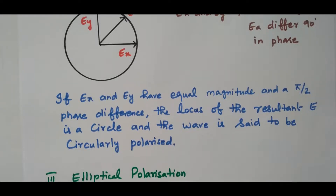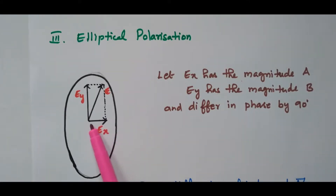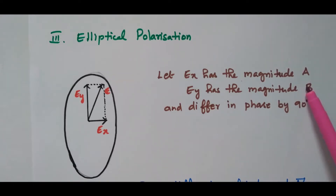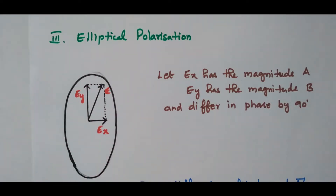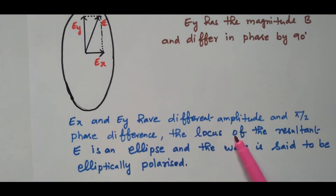The next type is elliptical polarization. Here Ex and Ey are available, but having different magnitudes A and B — Ex is lesser and Ey is higher. In circular polarization, both are equal and differ by 90 degrees. Here the phase difference between A and B is also 90 degrees, but the magnitudes are different. Due to the different magnitudes, the wave follows an elliptical form, not a circular form. If Ex and Ey have different amplitude and a phase difference of pi by 2, the locus of the resultant E is an ellipse and the wave is said to be elliptically polarized.